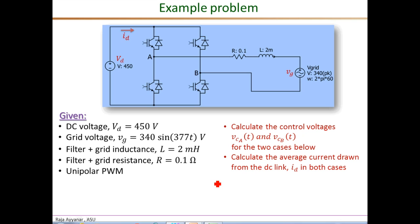The problem statement is to calculate the control voltages for each of these two poles, VCA for pole A and VCB for pole B, for two different cases of different power flows. Case one is power flow from the DC side to the AC grid at 5 kilowatts. This power flow should be at a power factor of 0.866 lagging, meaning the grid current IG lags the grid voltage VG by cos inverse of 0.866, which is 30 degrees.